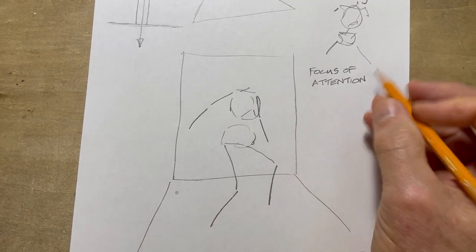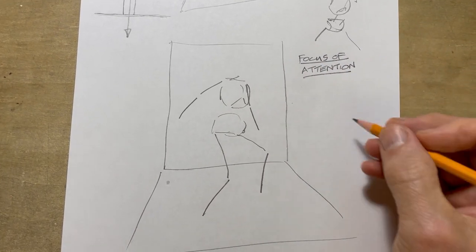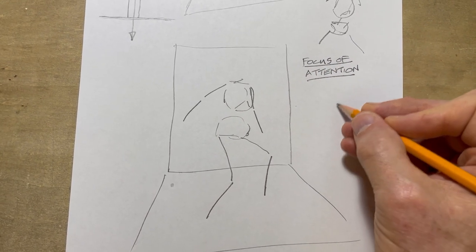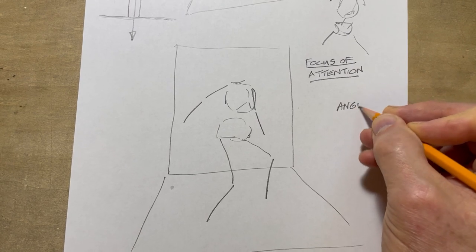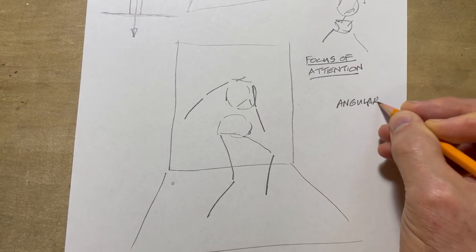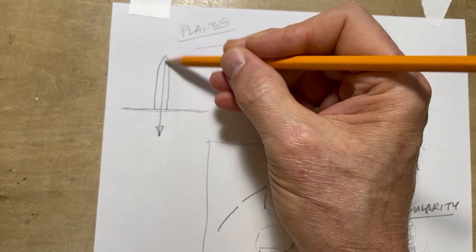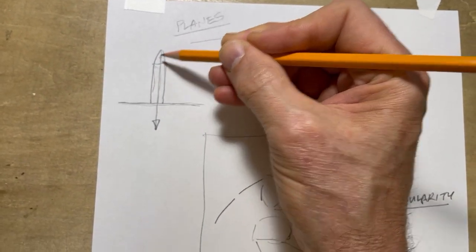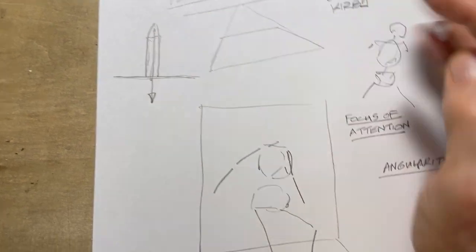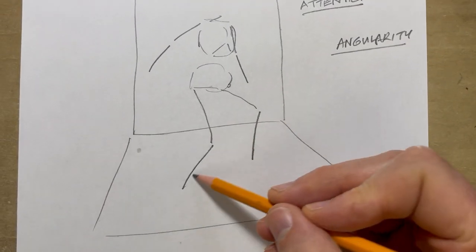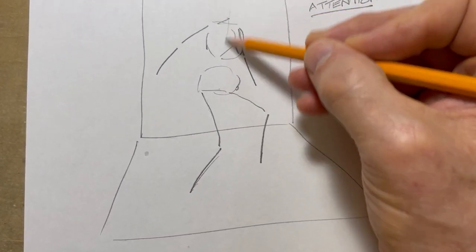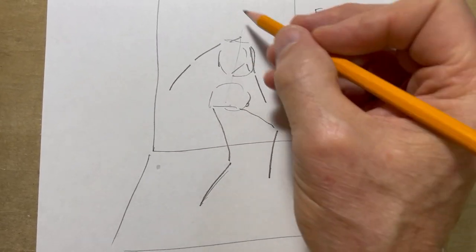And another thing while I'm thinking of it is angularity, because that also creates drama in your pictures. Now you'll notice up here a figure standing there stock still, it's like verticals, there's no drama to it. This figure on the other hand, there's no vertical, not even the torso is vertical, everything is at an angle.